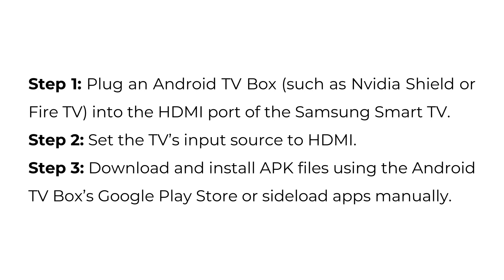Step two: set the TV's input source to HDMI. Step three: download and install APK files using the Android TV box's Google Play Store or sideload apps manually.